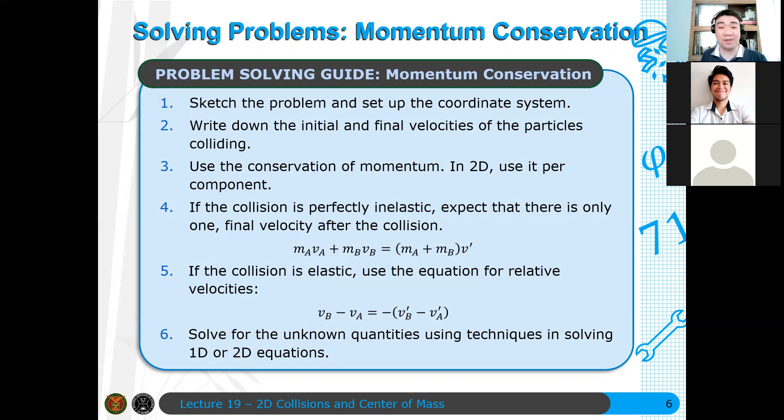In 2D, we use it per component. It's basically just an extension of what we're doing in 1D. If the collision is perfectly inelastic, you just need to use this equation. For 2D, you just add vectors. You have vectors, therefore you have the same equation but you need to do this equation for two or more components, for example X and Y.